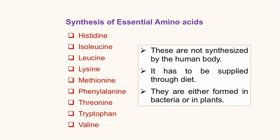The nine essential amino acids listed here are: histidine, isoleucine, leucine, lysine, methionine, phenylalanine, threonine, tryptophan, and valine. Let's take a look at how these are being formed.